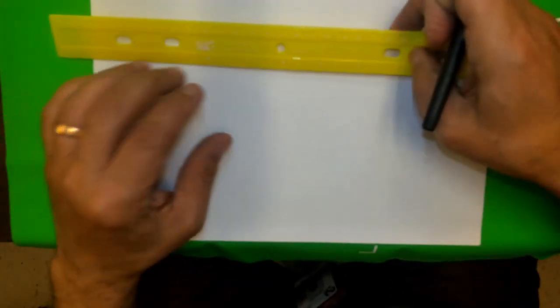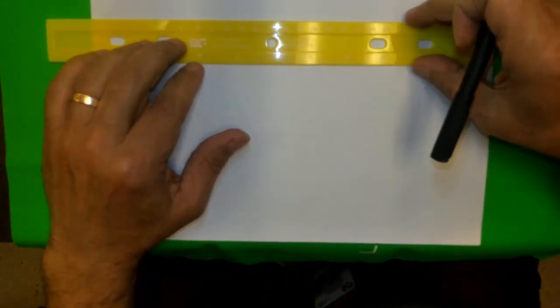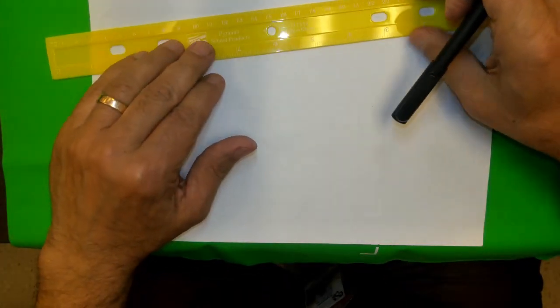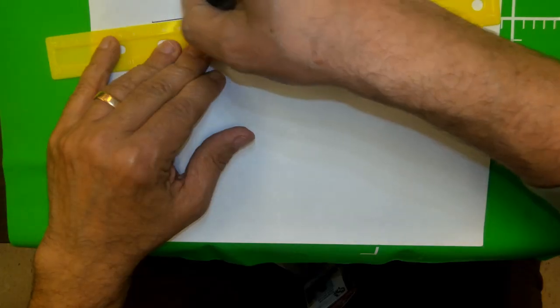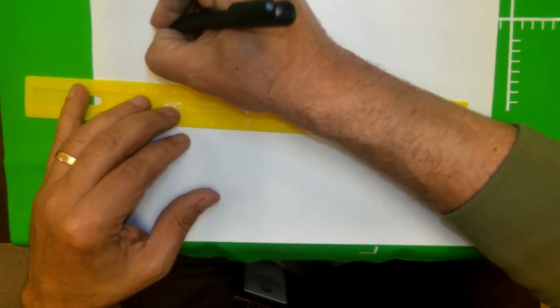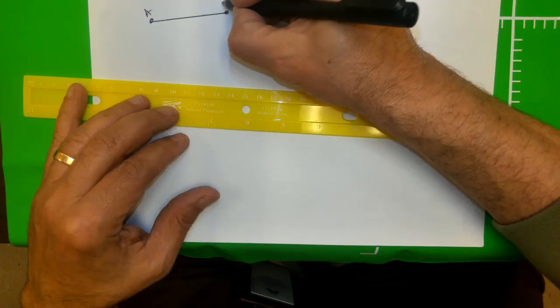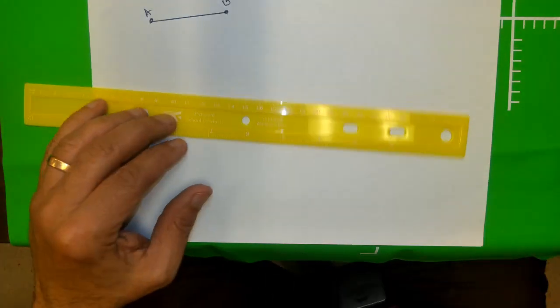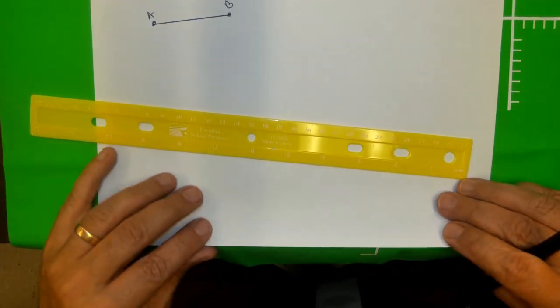Welcome all and welcome back at C squared. In this construction we're going to construct two congruent segments. So let's say we have this segment given to us, AB, and I want to construct a congruent segment of segment AB.